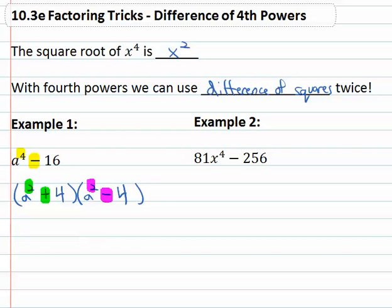The square root of a squared is a, the square root of four is two. It's going to factor to the sum and difference of the square roots. Now don't lose the first factor, the a squared plus four.